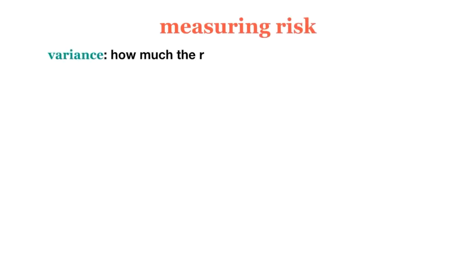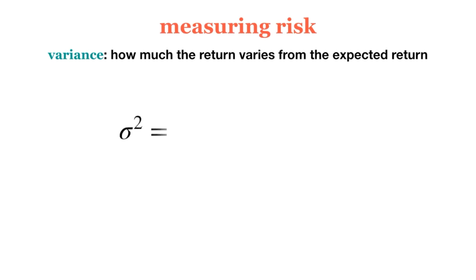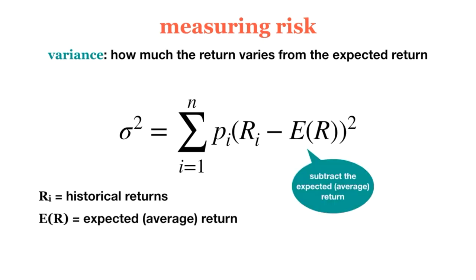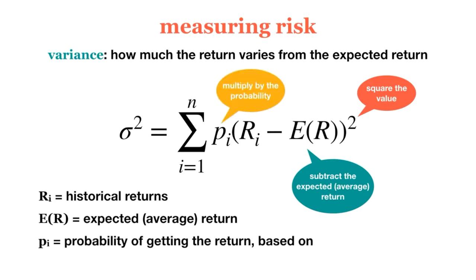So now that we know what risk is, how can we measure it? We can measure the risk of an investment by calculating the variance of its returns — that is, how much the actual return tends to vary from the average or expected return. We use the historical returns of an asset to calculate its variance. For each possible return, we'll subtract the expected or average return and square this value. This gives greater weight to values that deviate more from the expected value. Then, we multiply this by the probability of getting this return, based on how many times it has occurred in the past. We do this for every possible return, and then add these terms together.